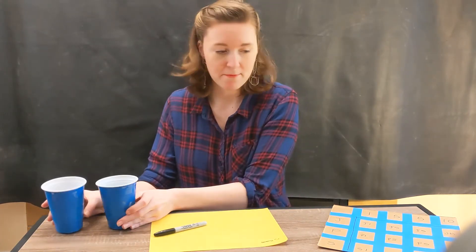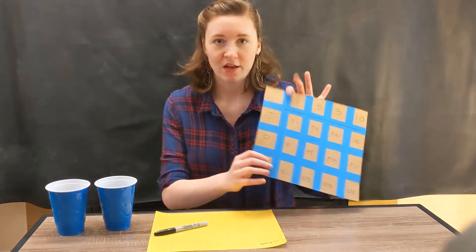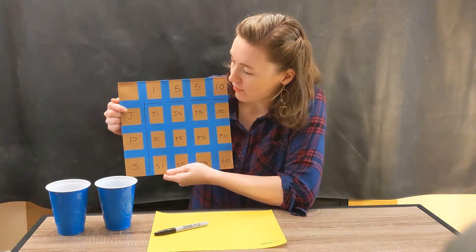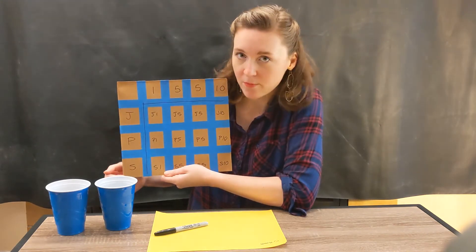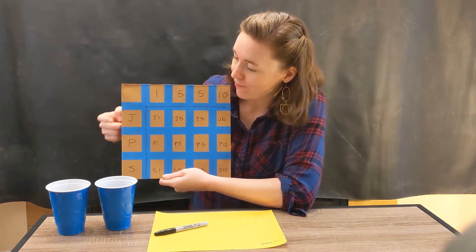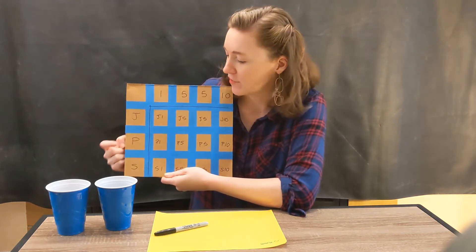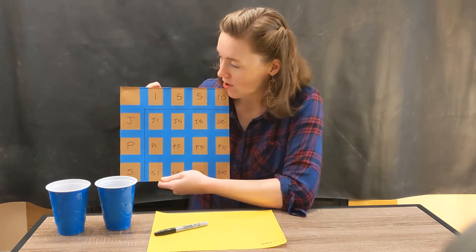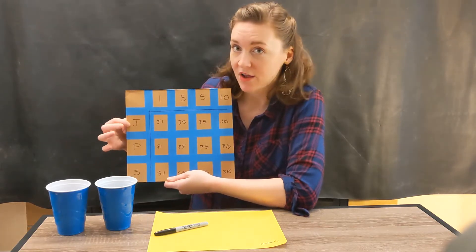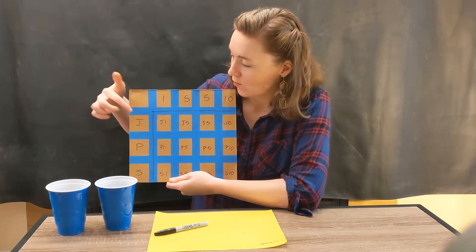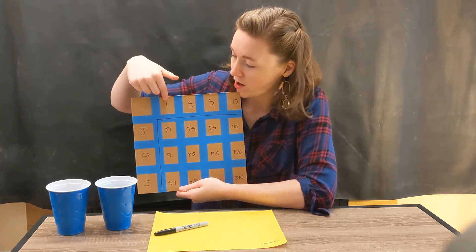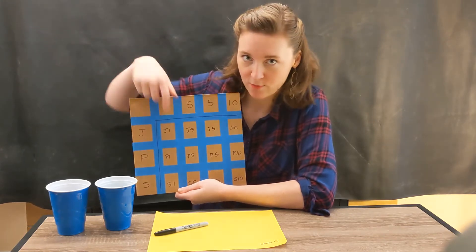Well we can figure that out by making a probability chart, and it's gonna look like this. So you make this by writing all of the options you have in one cup, and then all of the options you have in the other cup. So I wrote J for jumping jacks, P for push-ups, and S for sit-ups. And then all of the numbers that I had in my cup. And then you're gonna go across and you're gonna fill in what each outcome is. So here we're in the J row and the one column, so that's one jumping jack.